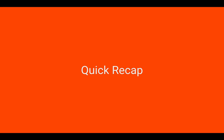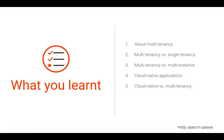We have now come to the end of this training video. Let's have a quick recap of what we learned. First, we got a quick introduction to multi-tenancy and its key attributes. Then we learned the difference between a multi-tenancy architecture and a single-tenancy architecture. Next, we learned the difference between a multi-tenancy architecture and a multi-instance architecture. Finally, we got to know about cloud-native applications and the benefits of using them.